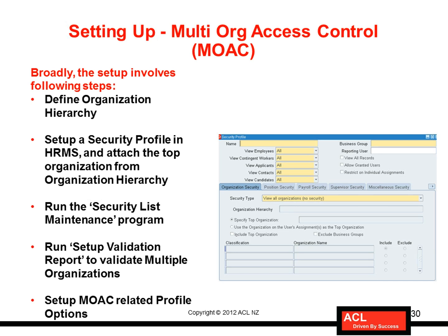Once you have defined an organization hierarchy and attached the operating unit to it, or optionally if you've defined simply the operating units without an organization hierarchy, the next step is you need to set up something called a security profile. It's a profile in which you define the security of operating units for users, to make sure who can access which operating units.